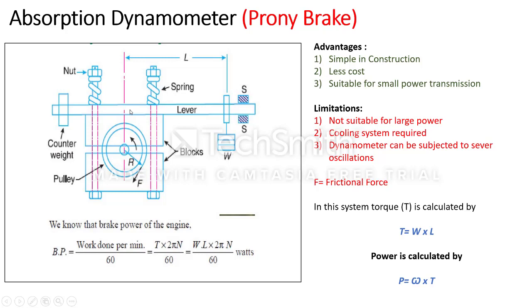Whenever the lever gets unbalanced during a reading, the counterweight automatically balances it. At the right side there are two stops, represented by the letter S — an upper stop and a lower stop, which act as limits. So the lever can move up and down, but cannot go above or below these stops. There is also a weight: if the lever is unbalanced during the experiment, we add this weight to maintain constant rotation.